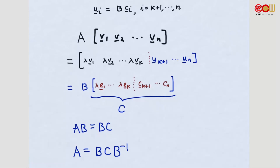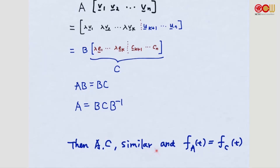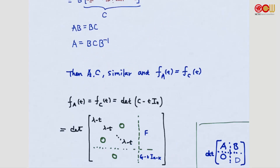Let's say we have a basis v1 to vk for the eigenspace. By the extension theorem, we can extend this to a basis B for R^n. Writing this in simpler notation: AB equals BC, meaning A equals BCB inverse. This means A and C are similar and therefore have the same characteristic polynomial — exactly what we need to analyze the multiplicity of lambda. So f(A) equals f(C), which is determined by the determinant of C minus tI_n.